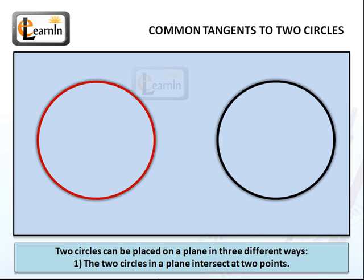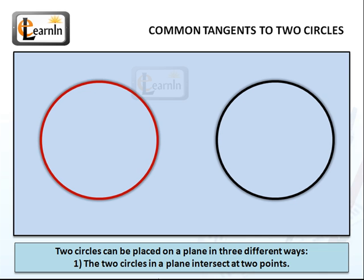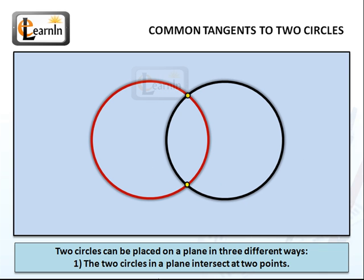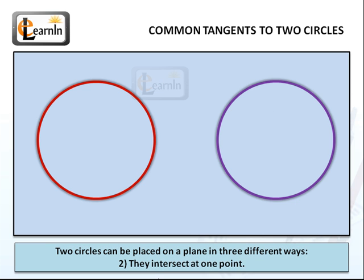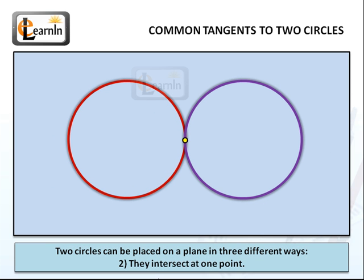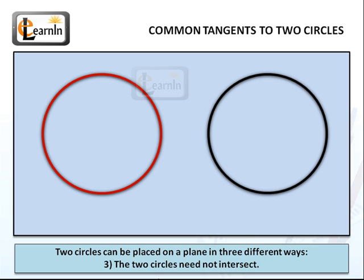Two circles can be placed on a plane in three different ways. The first is where the two circles intersect at two points. The second case is where they only externally or internally intersect at one point. The third way is where the two circles don't intersect at all.